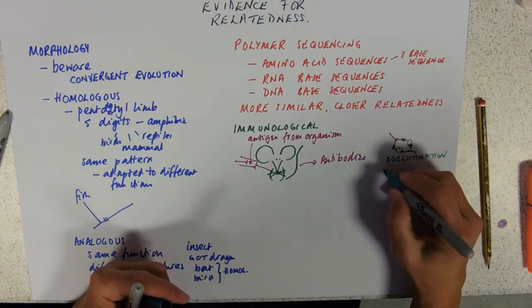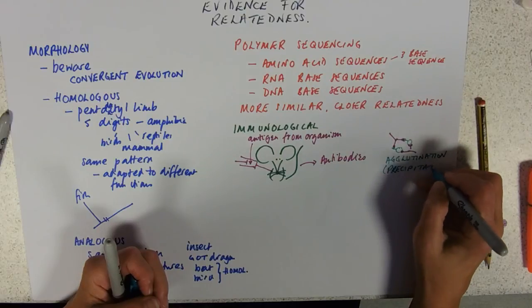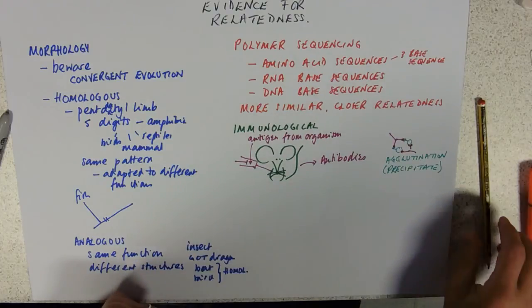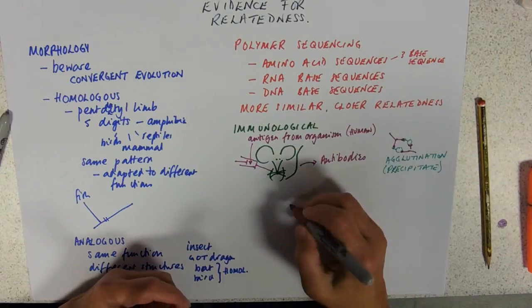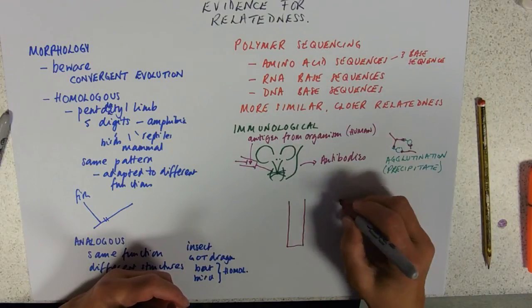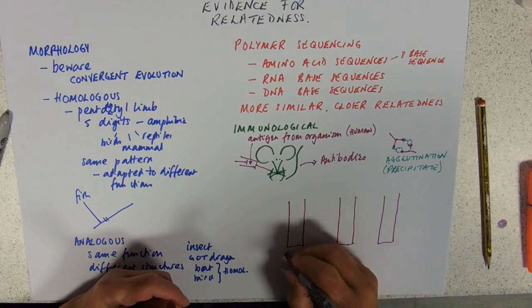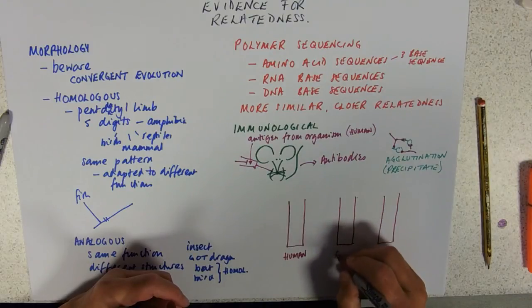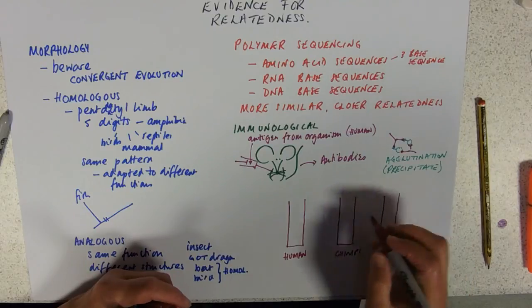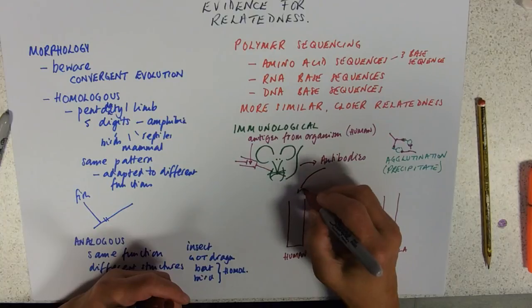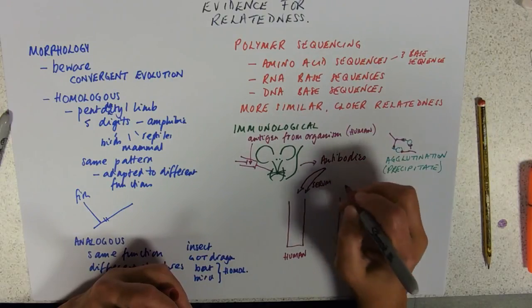And so it forms pretty much a sort of a precipitate, but let's think of it like that. So say we're looking at humans. So we put in our antigen from our human. And then you get a set of tubes. And we want to know how closely related humans are to chimps and, say, the gorillas. I was going to put orangutans, it's too long a word, too lazy. So you mix the antibodies and the serum, maybe blood, something like that, into that.